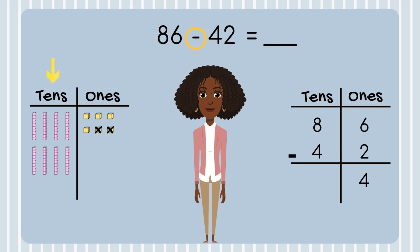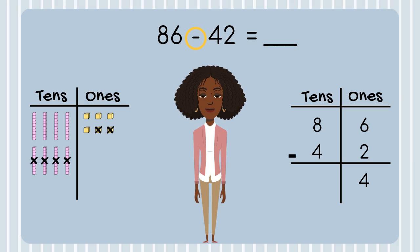Next, I will subtract my tens place. I have 8 tens, and I need to take away 4. Now I have 4 tens left. I'll put a 4 in my tens place. I can see that 86 minus 42 equals 44.